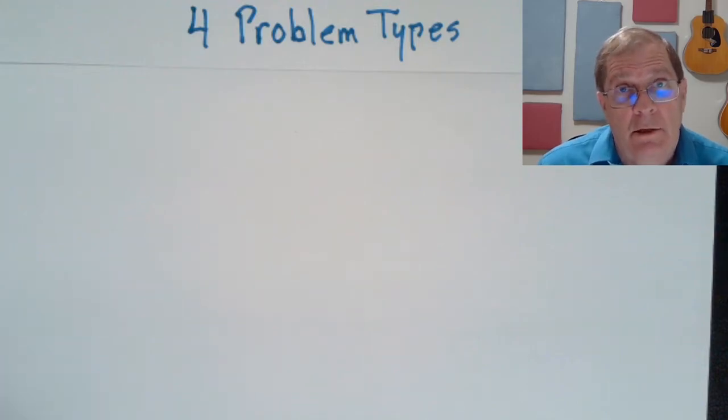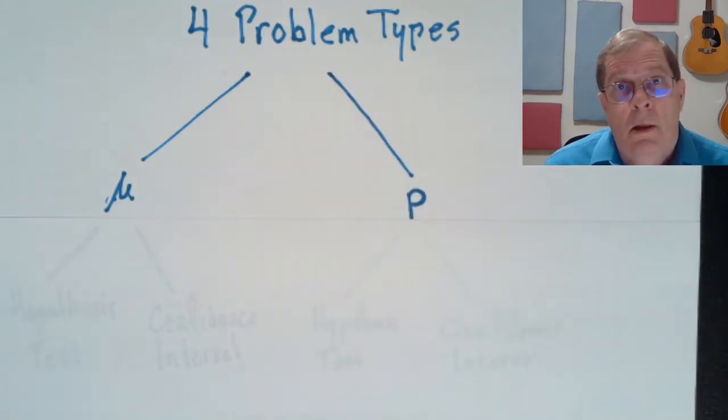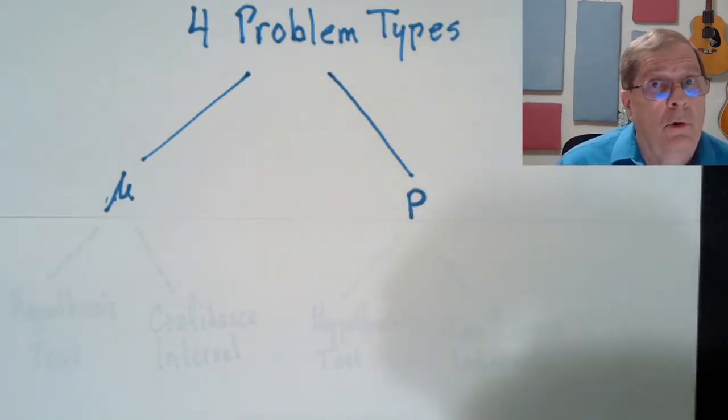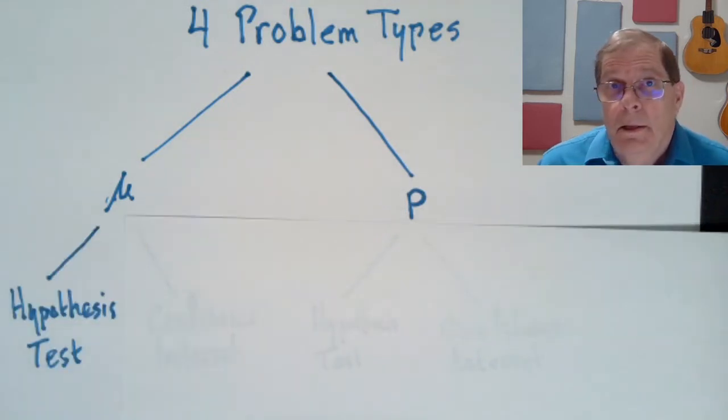In Modules 7 and 8, we're going to look at four specific types of problems. Two of the types of problems are interested in looking at the mean of a numerical variable in a population. The other two problems are looking at the proportion of a categorical variable in a population.